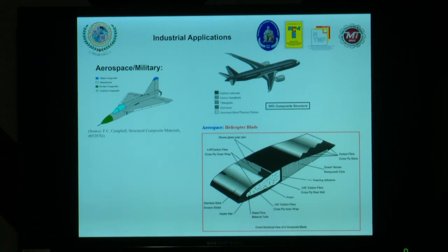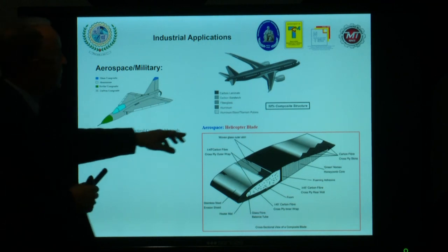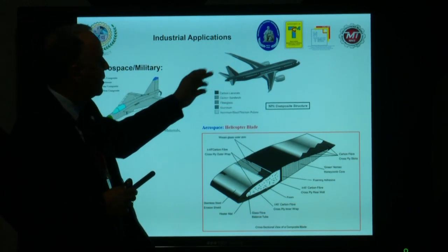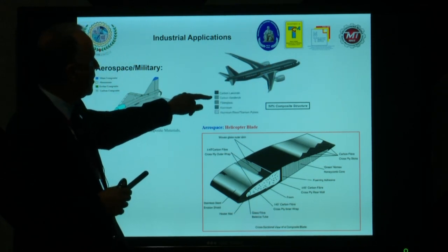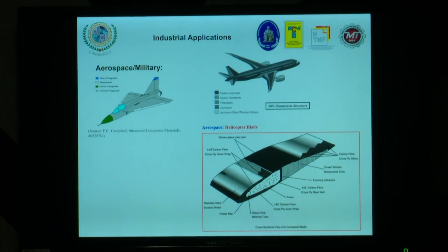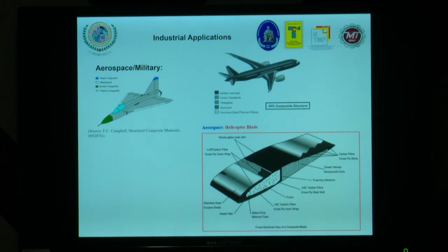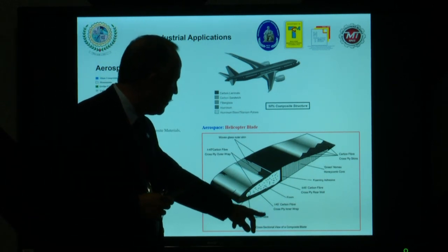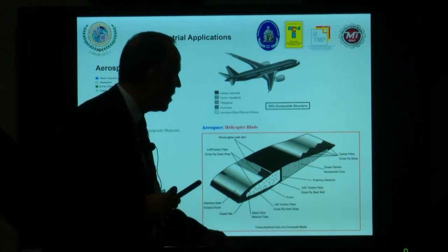Concerning industrial applications of MMC: this type of composite can be used in aerospace and military. In aircraft, around 50% is composite structure — carbon laminate, carbon sandwich, fiberglass, aluminum, aluminum-steel, or titanium. Another example is helicopter blades: the structure uses many composite materials — over-glass outer skin, 45% carbon fiber in part of the blade, heater material, glass fiber at 40% in another area, and carbon fiber in other sections.